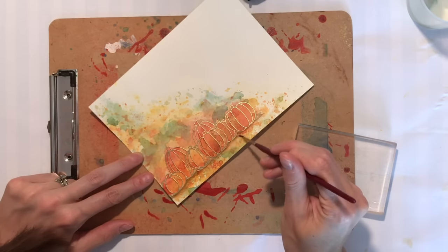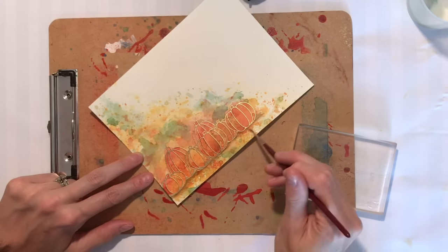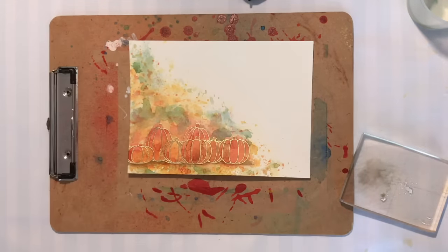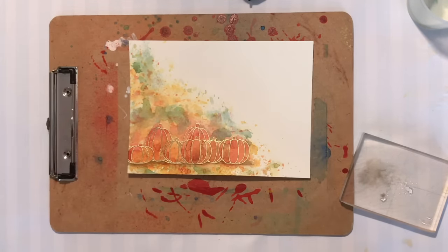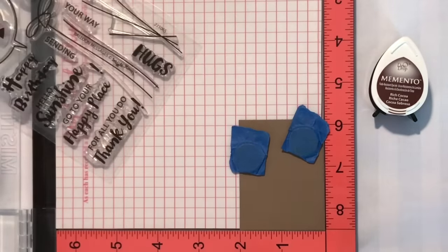And then I'll take my brush and kind of thin out as it fades, as it gets away from the pumpkin base so it fades and so that shadow, it looks more like a shadow. Alright, now I'm going to do my sentiment. Now it's sentiment time.